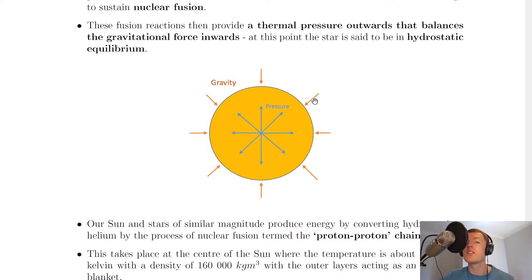But before nuclear fusion takes place the outward thermal pressure from the inside is not big enough to prevent the gravitational forces acting on all parts of the outside of the molecular cloud from contracting.